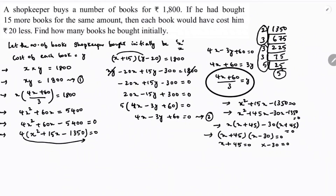From (x + 45)(x - 30) = 0, we get x = -45 or x = 30. Since the number of books cannot be negative, x = -45 is not possible. Therefore, the number of books he bought initially is 30.